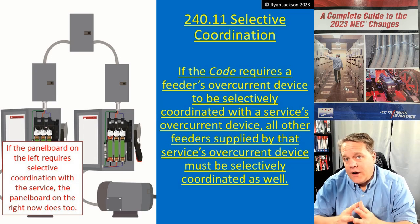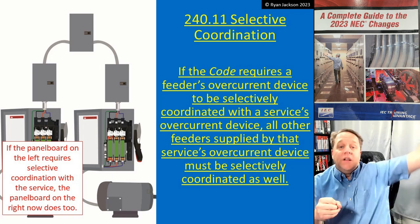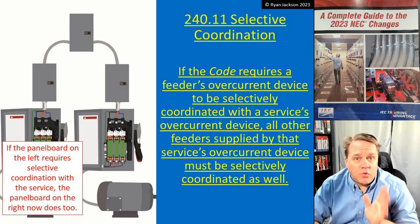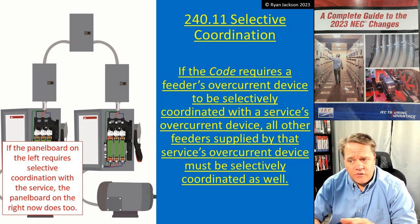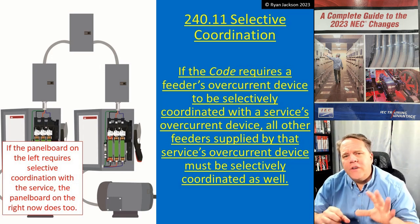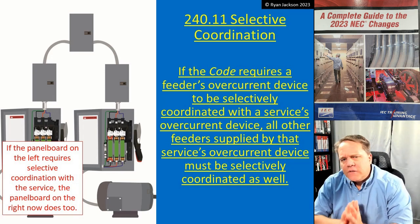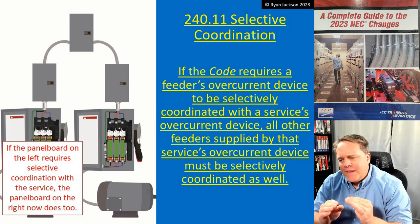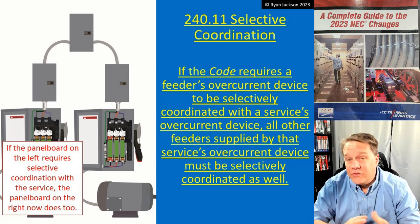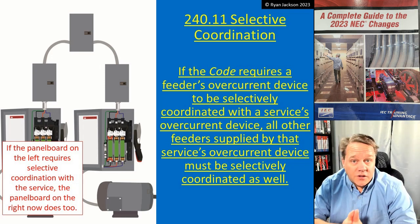700.32 comes to mind - with an emergency system, we don't want any single ground fault taking down the entire emergency system. There's also a requirement in 620.62 for multiple elevators, because you don't want a fault on one elevator knocking down the entire system. There are also some requirements in Article 517 for hospitals - look at 517.26, because while we have to comply with Article 700, section 517.26 removes some of those requirements, so hospitals are not quite as cut and dried.